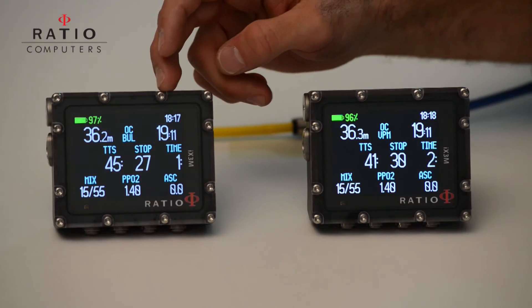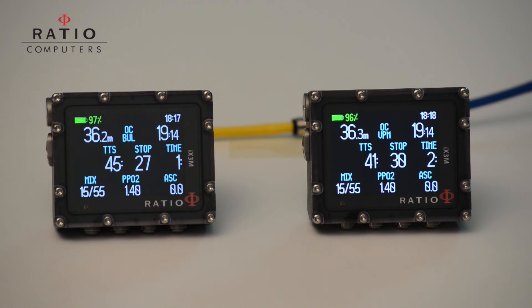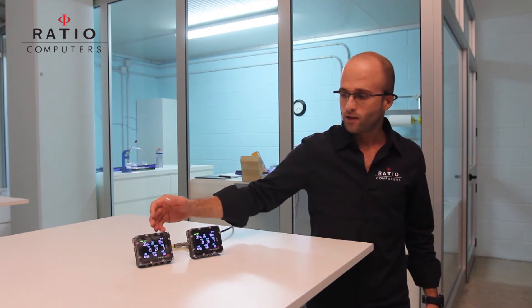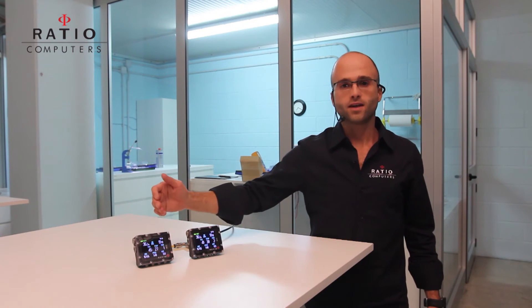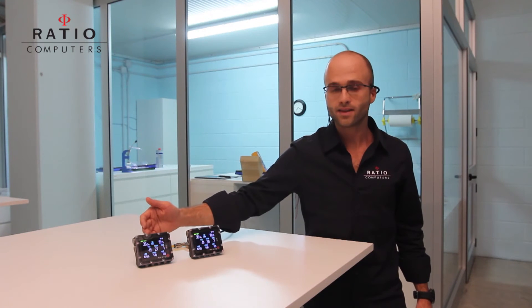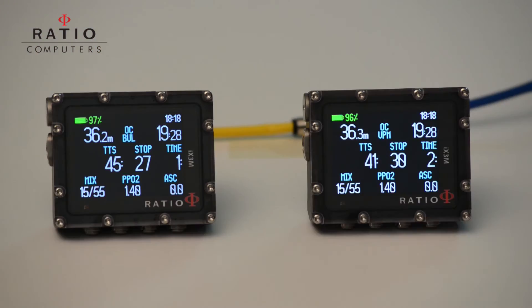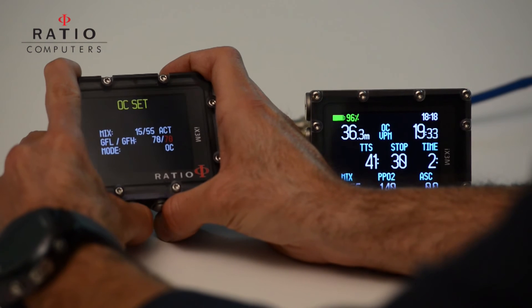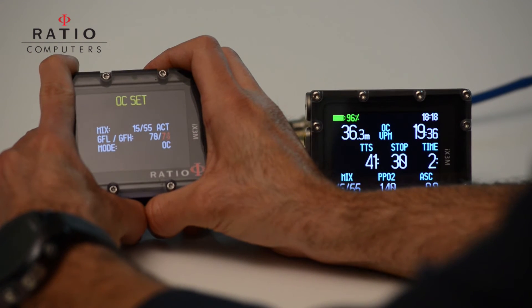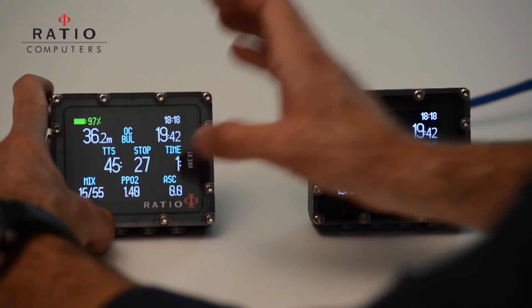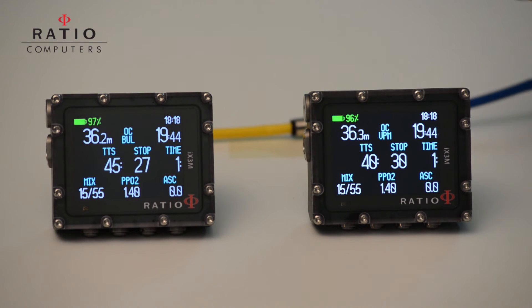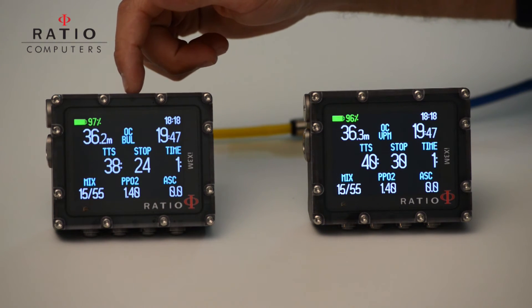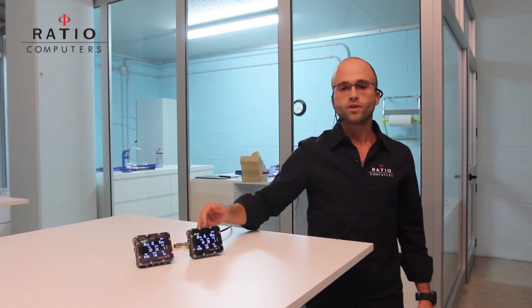What we will immediately see is that the first decompression step will be brought more to the surface. Now if I want to reduce significantly the total decompression time, I need to rise the gradient factor high. Rising the gradient factor high to 85 percent, we will see that the computer will reduce the total decompression time.